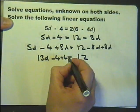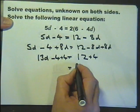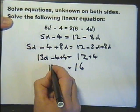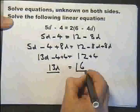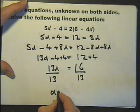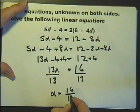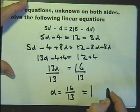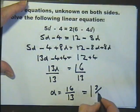5d plus 8d is 13d minus 4. And we will add 4 to both sides, and that will give us 16 there and 13d there. Last move, divide both sides by 13, give me the answer of d equals 16 over 13, which if you like you can change to 1 and 3 thirteenths.